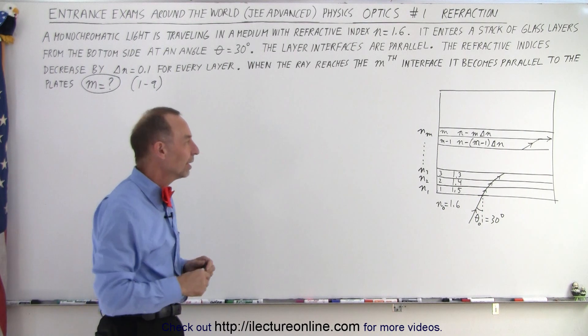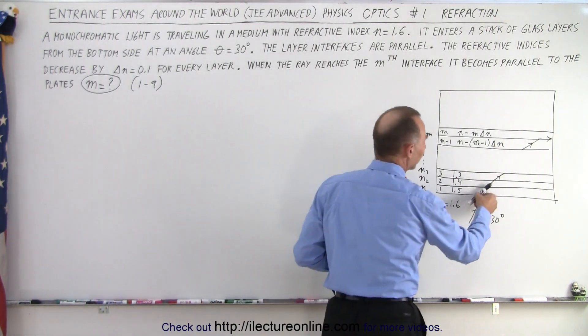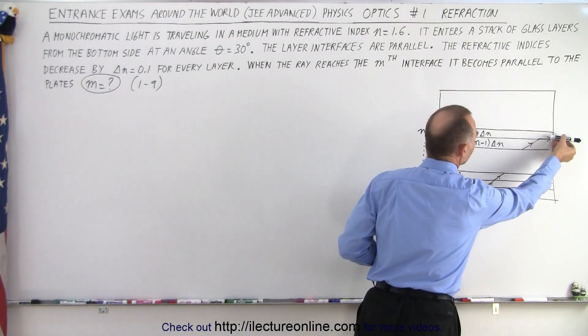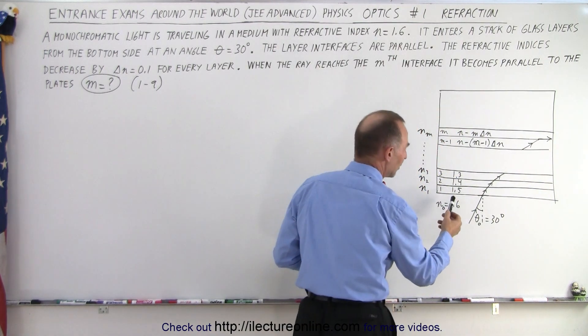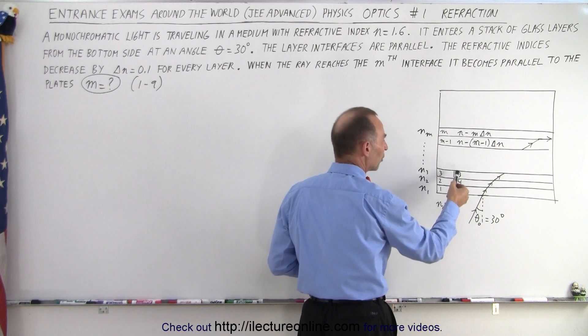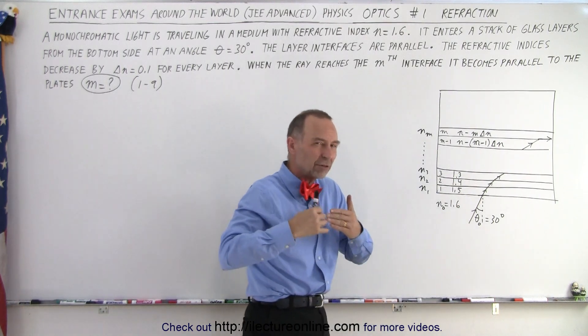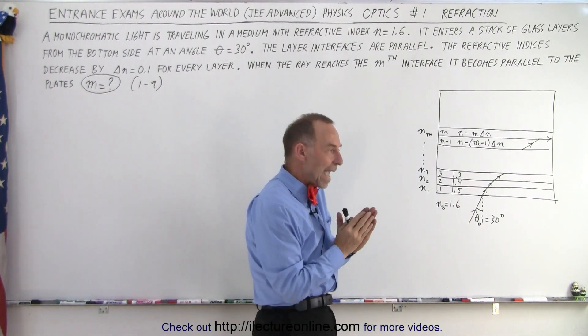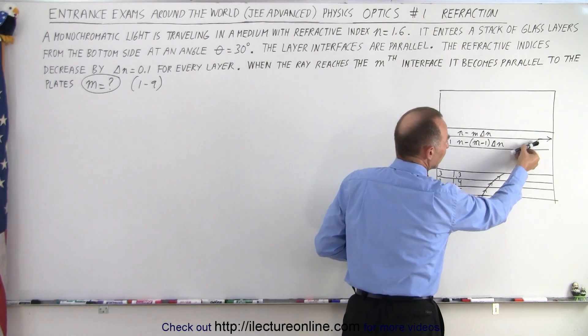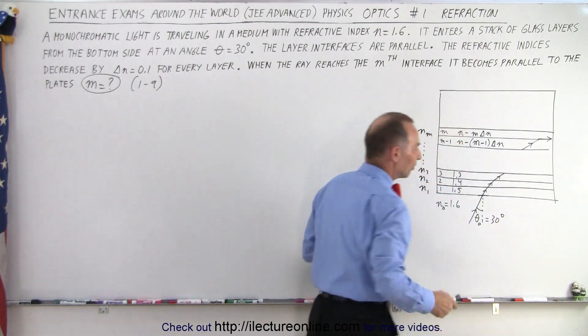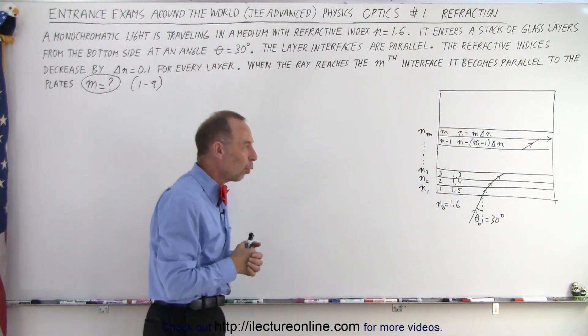In other words, how many layers are required until the light finally becomes parallel to the plate surfaces? You can see that every time we go to a smaller index of refraction, when the index of refraction decreases, the angle moves away from the normal. So that means the ray is going to continue to bend and bend and bend until eventually it's parallel to the plates. So how many layers does that require?